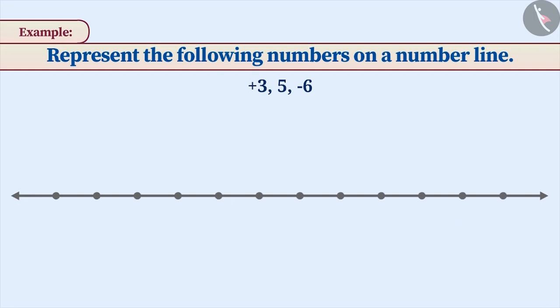Mark any point as 0. The first number we have to mark is plus 3, which is a positive number. Move 3 places to the right and mark the number that you arrive at as 3. This is 3 points to the right of 0.